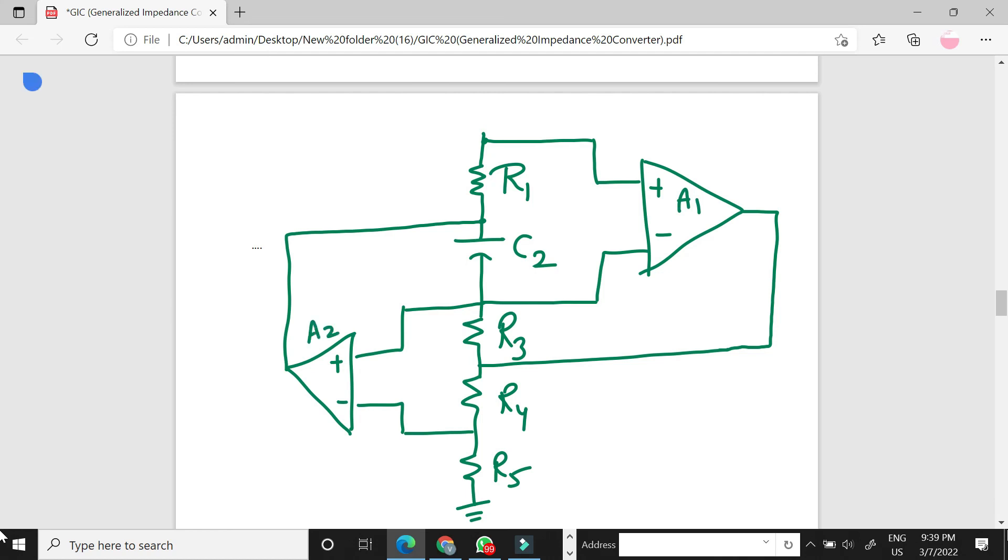Here A1 and A2 indicate two different amplifiers. This is the inductance simulator circuit.